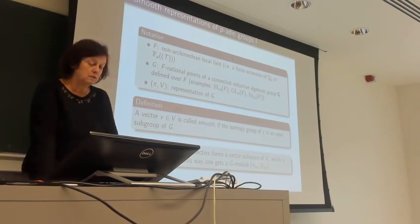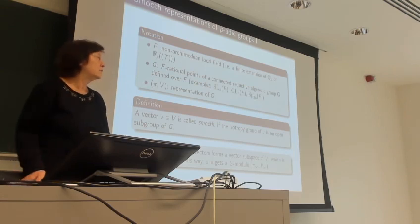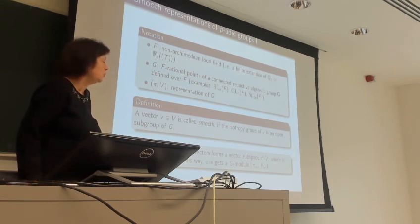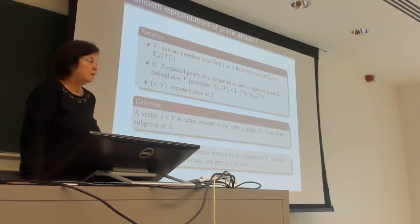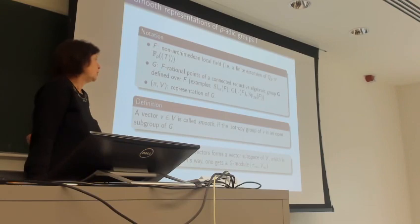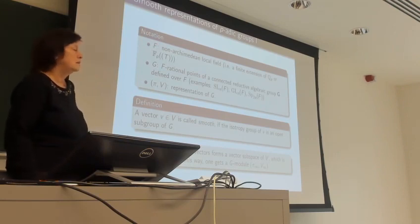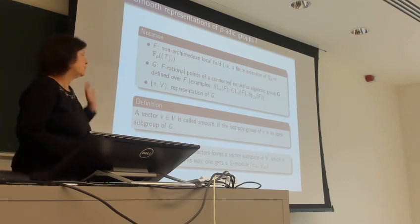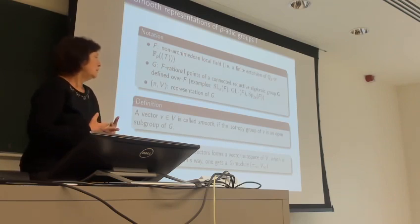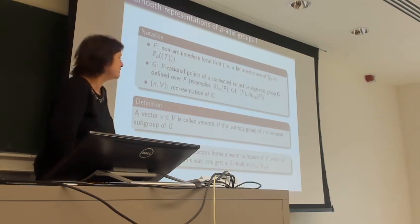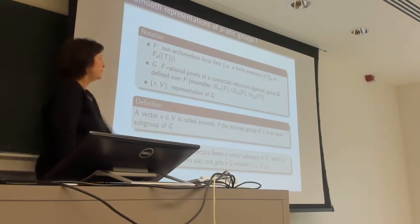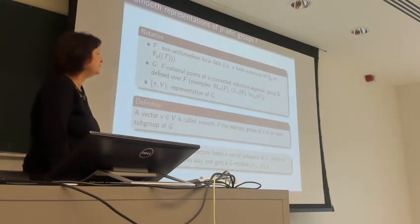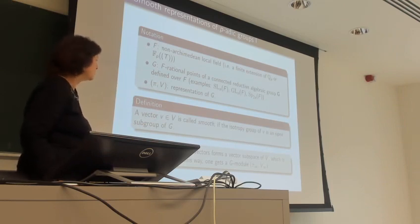G will be what I call a p-adic group, or p-adic reductive group. By this I mean the group of F-rational points of a connected algebraic reductive group defined over F. Favorite examples include GL_N(F), which is the easiest, but here we may prefer SL_N(F), or classical groups like the symplectic group, or even groups of exceptional type.